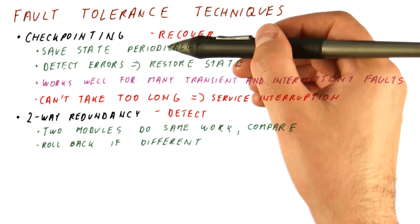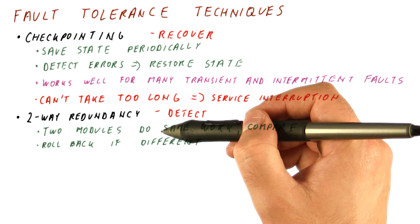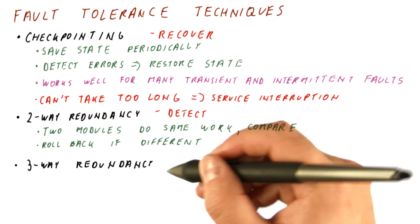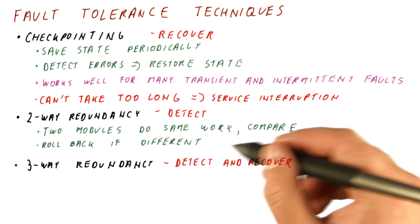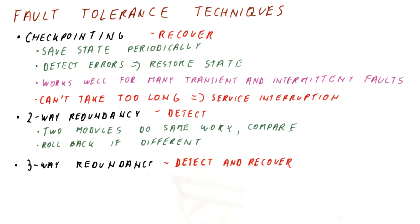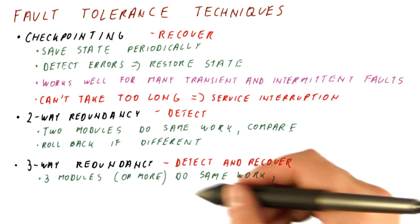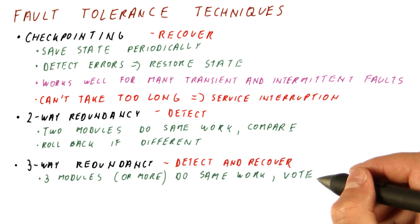While these techniques recover and detect things separately, we can also have three-way redundancy, which can both detect and recover faults. In this case, three modules or more do the same work and then vote for what the correct result should be.